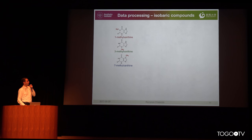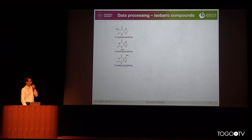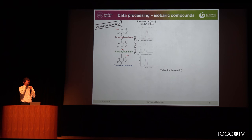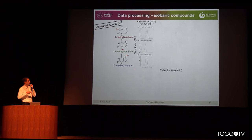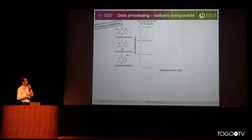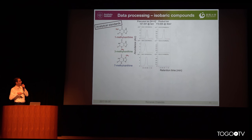With our method we can also distinguish isobaric compounds for which two parameters — retention time and accurate mass — are not enough. For example, these caffeine metabolites have the same molecular formula and the same molecular mass. If we look at their chromatograms from the column, they elute around similar retention times, making it very difficult to distinguish them.